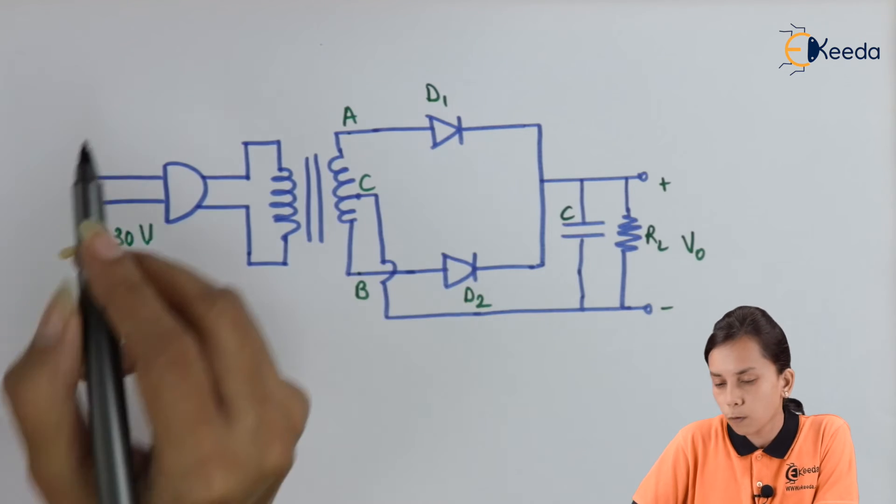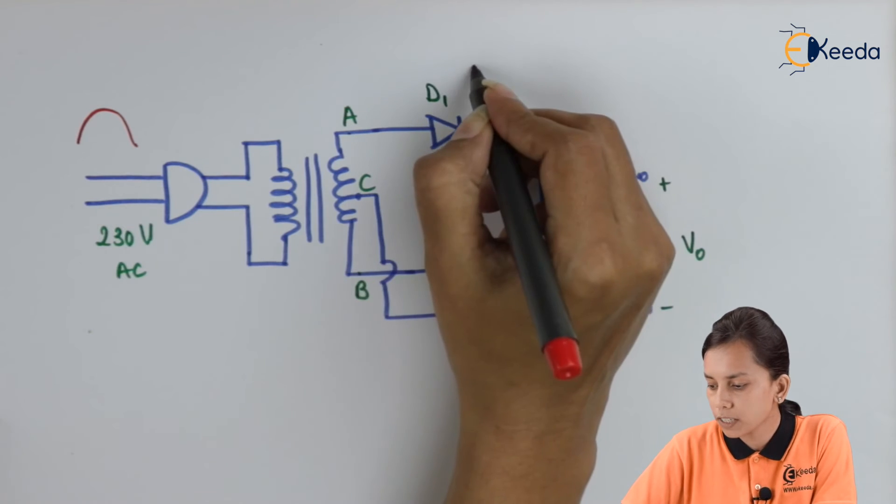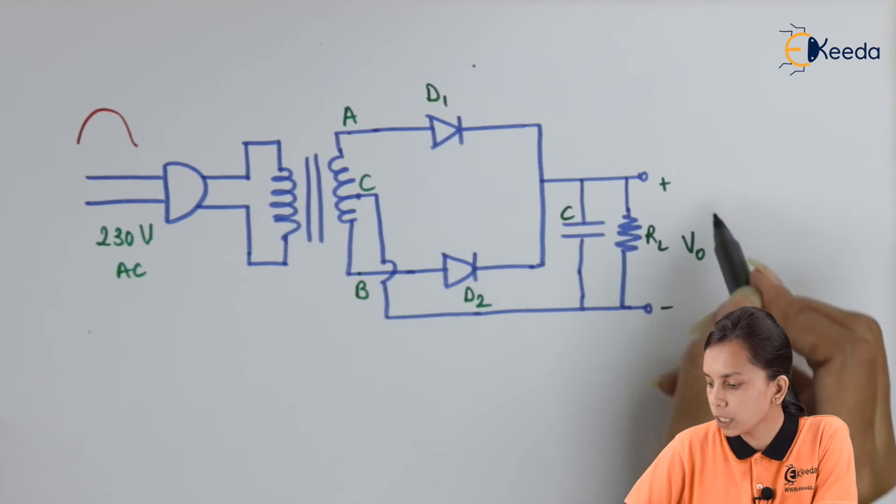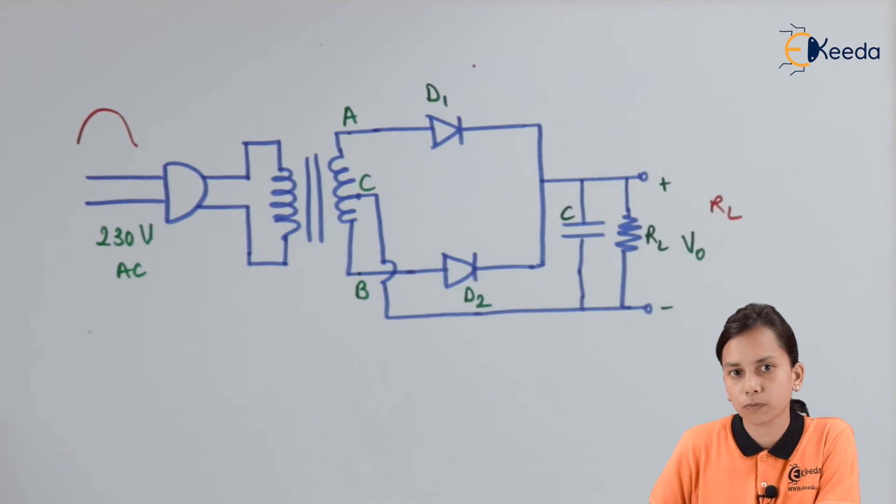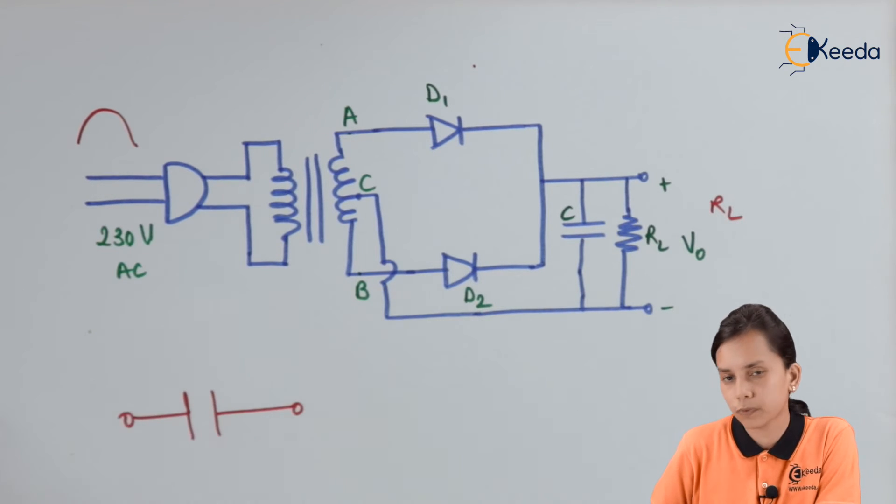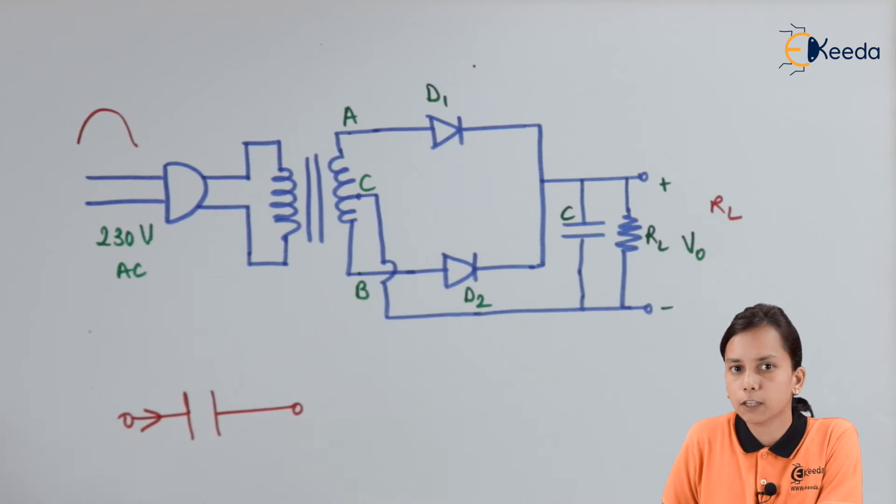As we know that when we are getting a positive cycle, D1 will be in an on state and D2 will be in an off state. And we will get some output. When we are getting output at RL, the capacitor has some property. That when the current is flowing through the capacitor, it will charge.